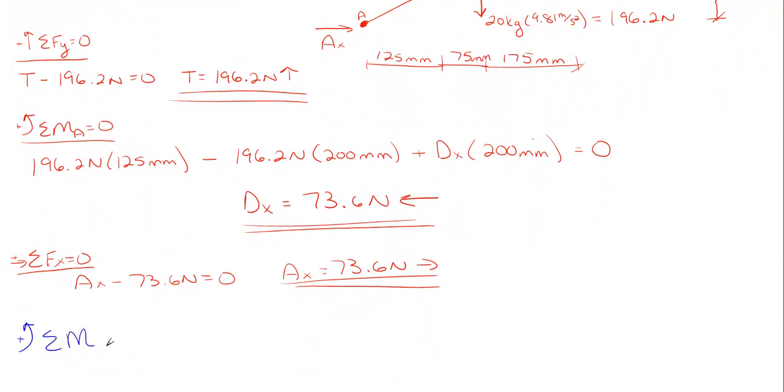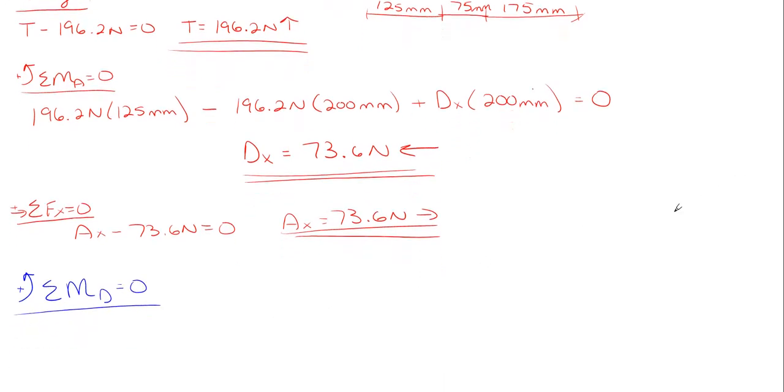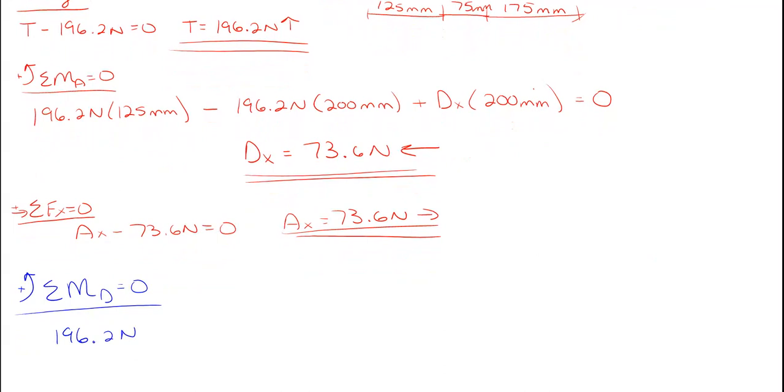Instead of summing moments about A, I'm going to sum moments about D and have it all be in equilibrium still. What we would have is 196.2 newtons. Oh, let me get the drag there.